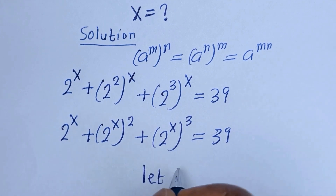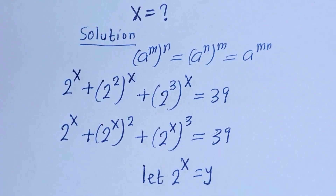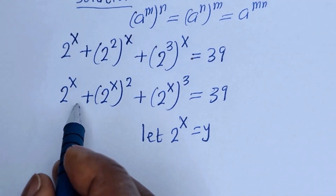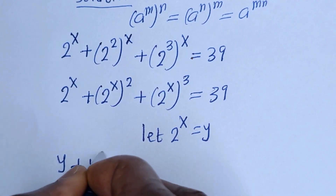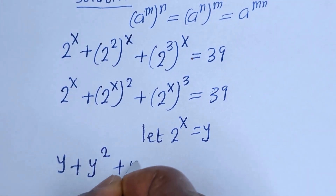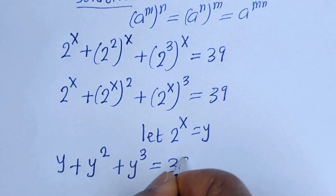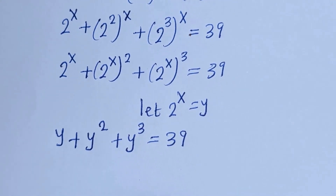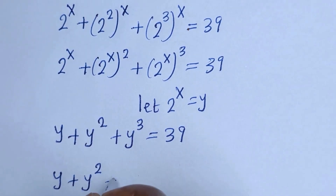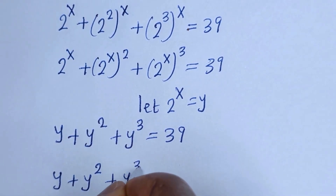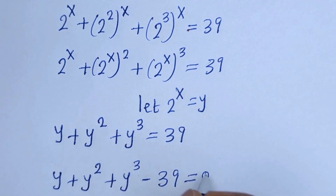Now let 2 raised to power x equal y. Then we have y plus y squared plus y raised to power 3 is equal to 39. And this gives us y plus y squared plus y raised to power 3 minus 39 is equal to 0.